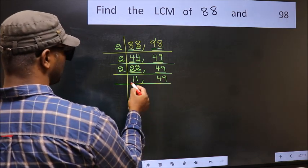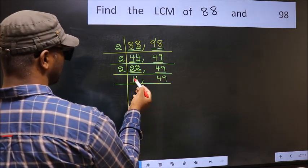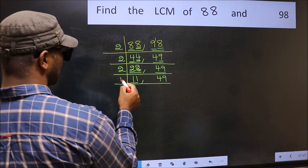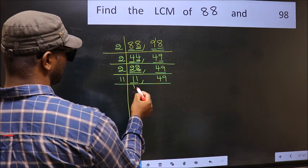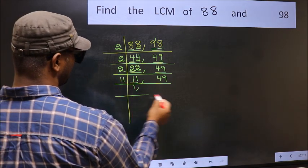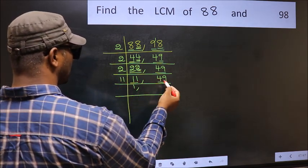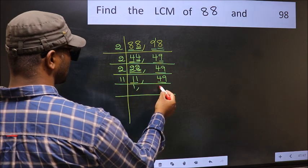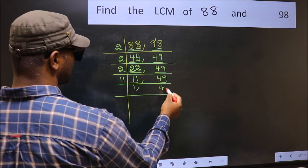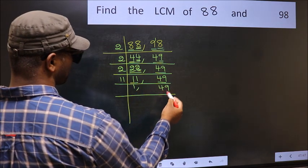Now we have 11. 11 is a prime number, so 11 once is 11. The other number 49 is not divisible by 11, so write it down as it is.